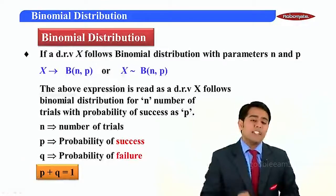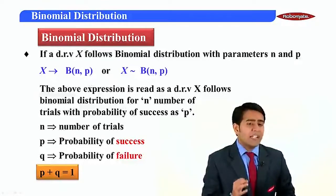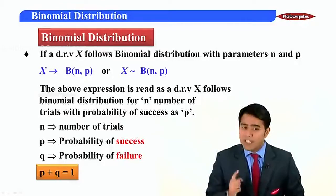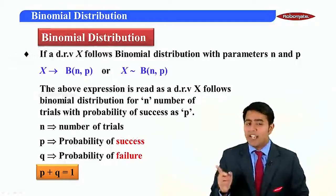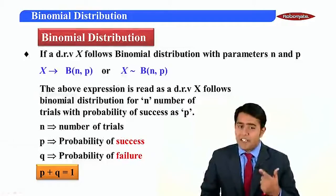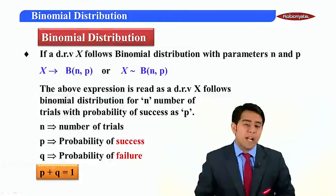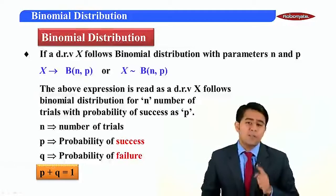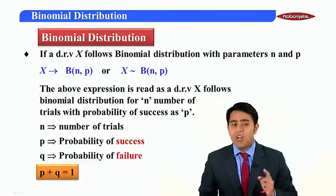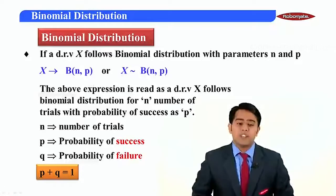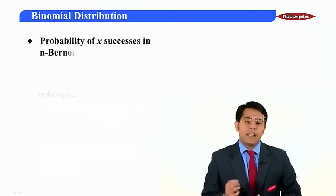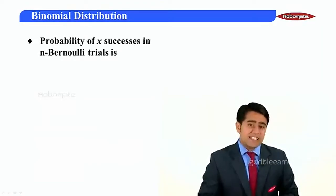We should understand that the sum of the entire probability of an event is always 1. Since we have two outcomes — success and failure — the sum of their probabilities, that is p plus q, will always equal 1.